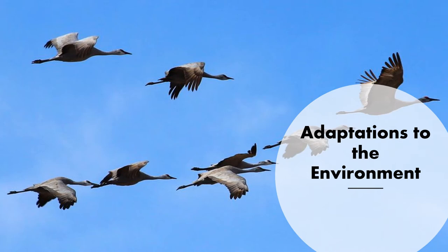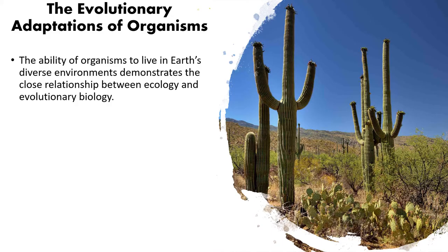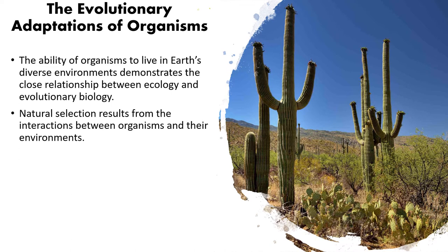Birds are a great example of dealing with harsh winter conditions. Organisms are found in areas they are adapted to live in, because over long periods of time through natural selection, they have developed mechanisms to survive in different environments. There is a very close relationship between ecology and evolutionary biology. Natural selection always results from interactions between organisms and their environment — traits that allow an organism to survive and reproduce are selected for.